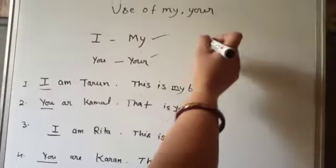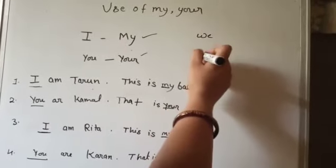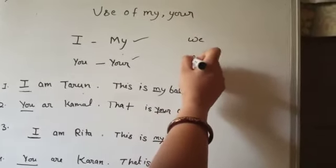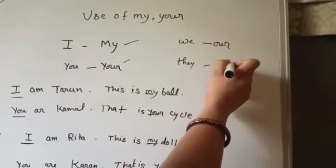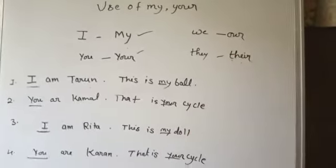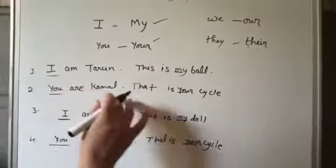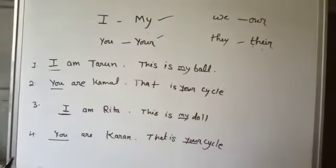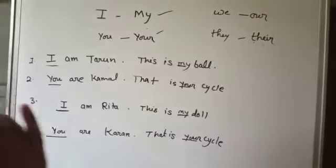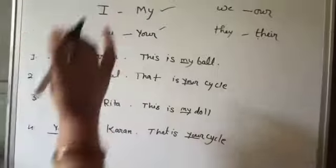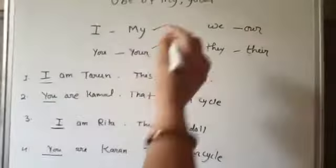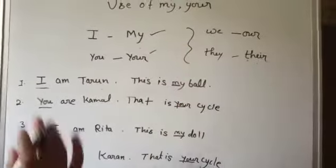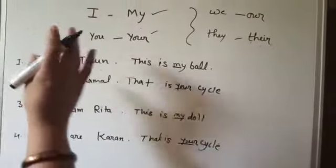तो आपको बस इतना remember रखना है कि I के साथ 'my' और you के साथ 'your'। आप अगले chapter में 'we' और 'they' पढ़ेंगे — 'we' के साथ 'our' यूज होगा और 'they' के साथ 'their'। यहाँ बता रहा है कि मैं Tarun हूँ — यह मेरी ball है, तुम Kamal हो और वह तुम्हारी cycle है। अपनी चीजों को बताने के लिए इन words का यूज किया गया है: my, your, our and their।